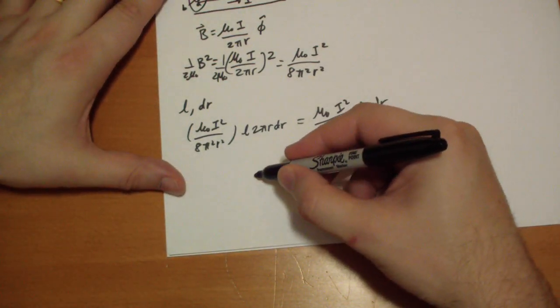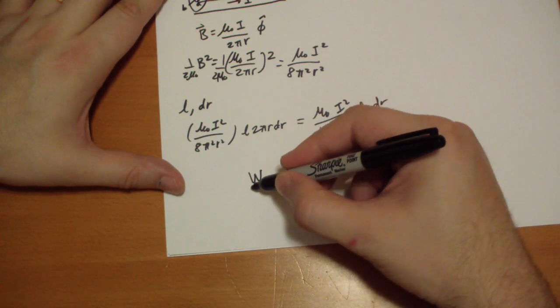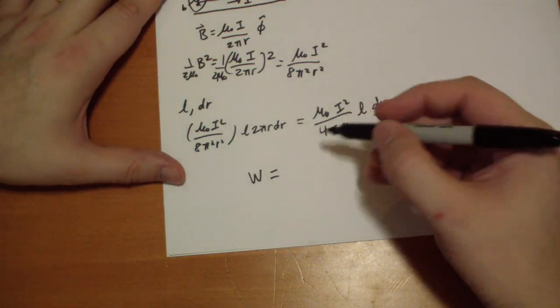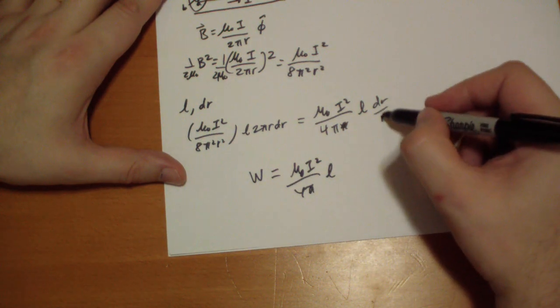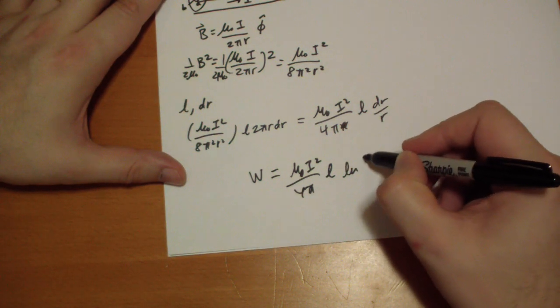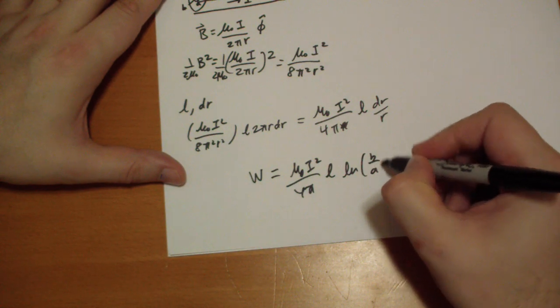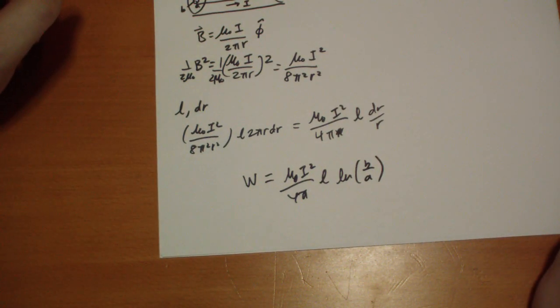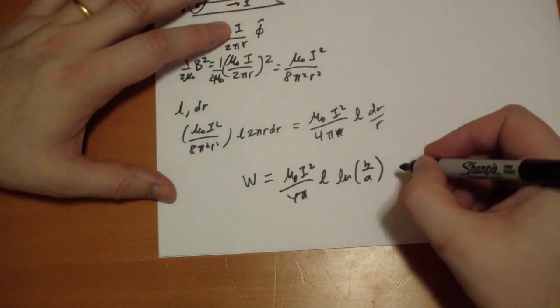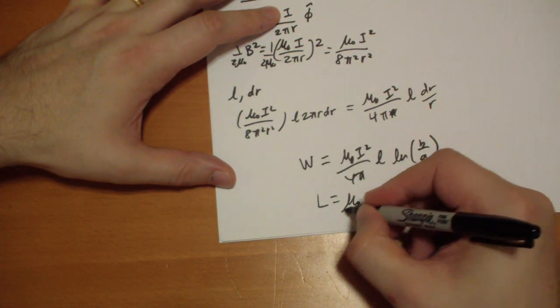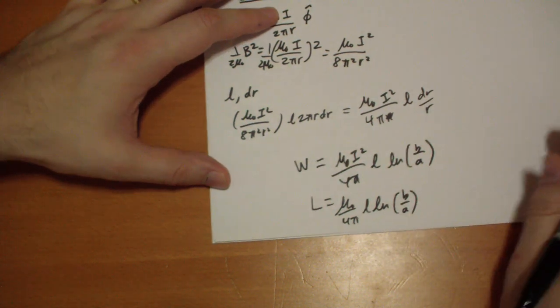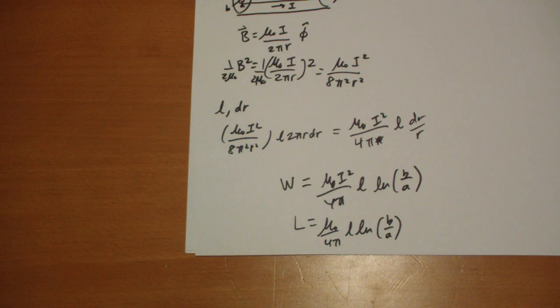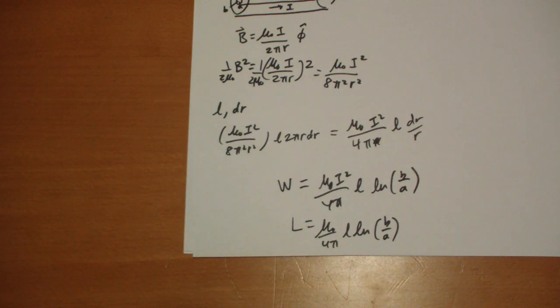So we're going to integrate from A to B. So the total energy for a length over L is going to be equal to mu naught i squared over 4 pi L. And then the integral from A to B of this is just log of B over A. And so we can calculate our L. Remember work equals L i squared. So L is going to be mu naught over 4 pi L log of B over A. So that's the inductance of a length L. So this is the work done for a length L.